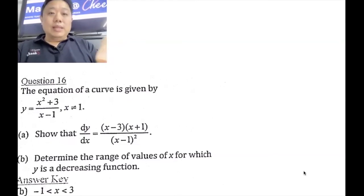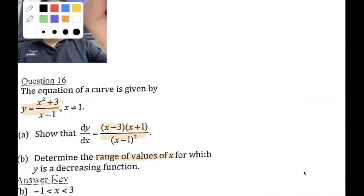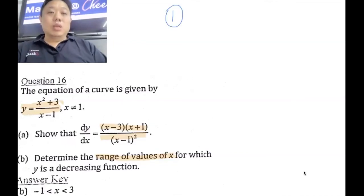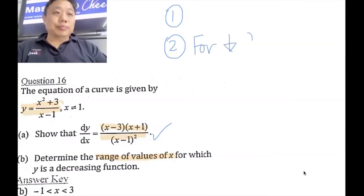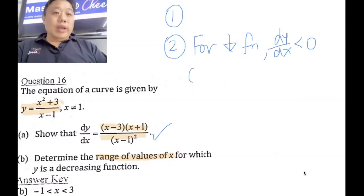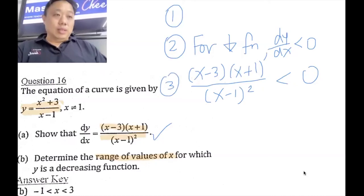Now the curve is given by a new equation. The question says show that dy/dx equals a given expression — you execute a quotient rule to do it, which I'm not focusing on in this video. Then it says 'determine the range of value of x', so when you see this, range of value of x means step one: do your dy/dx and you should get this answer. If you don't get this answer, take this answer and proceed on. Now I need to teach you how to analyze step two. For decreasing function, dy/dx less than 0 — write this, it is worth one mark.